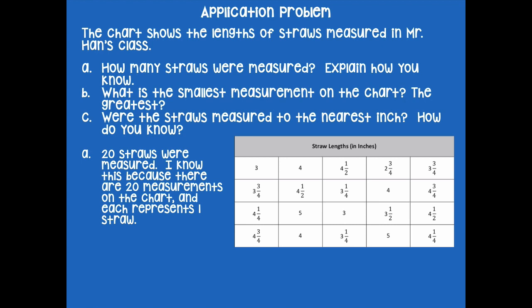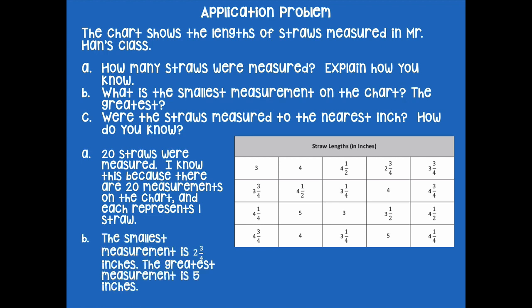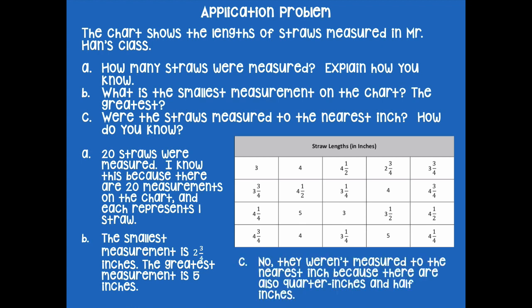Part B says what is the smallest measurement on the chart and the greatest? The smallest measurement is two and three quarter inches, and the greatest measurement is five inches. Question C asks, were the straws measured to the nearest inch? No, they weren't measured to the nearest inch because there are also quarter inches and half inches. So they were actually measured to the nearest quarter inch — we have measurements that are in inches, half inches, and quarter inches in this chart.